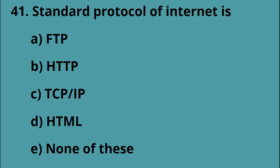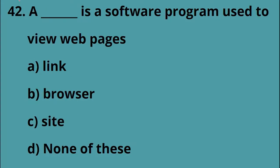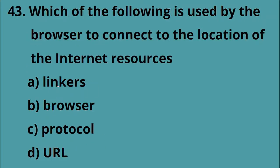The standard protocol of the internet is Option C, TCP/IP. A software program used to view web pages is Option B, browser. Which of the following is used by the browser to connect to the location of internet resources?